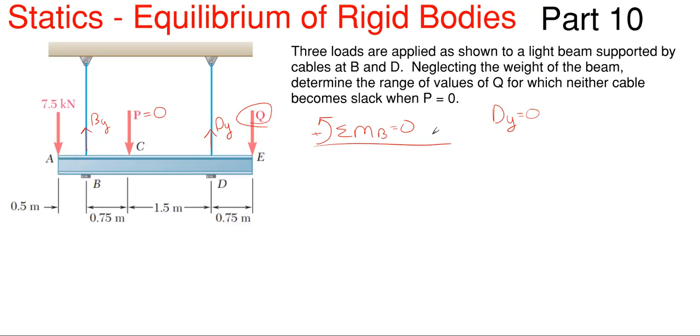So when this happens, DY will be 0 or we'll plug in DY equal to 0 and we will see what Q has to be. So assuming that DY is going to be 0, what kind of value for Q makes that happen?